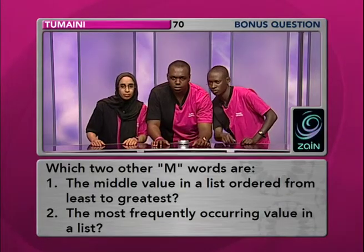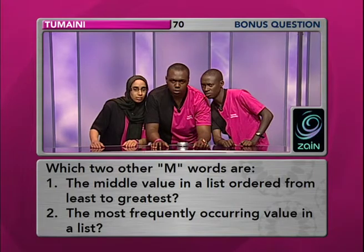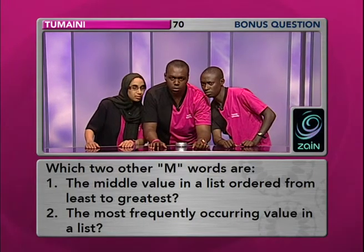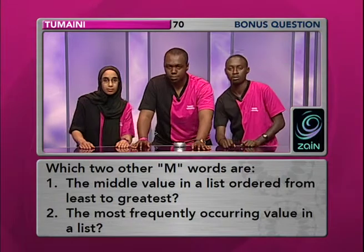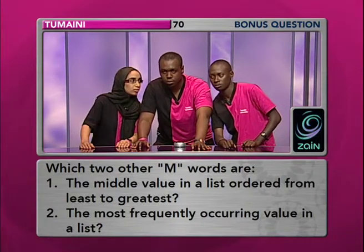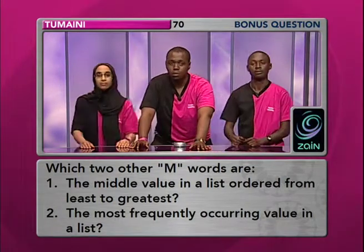For 20 bonus points, 10 points apiece. Which two other M-words are: 1. The middle value in a list ordered from least to greatest? Median. Correct. 2. The most frequently occurring value in a list? Mode. That is correct.